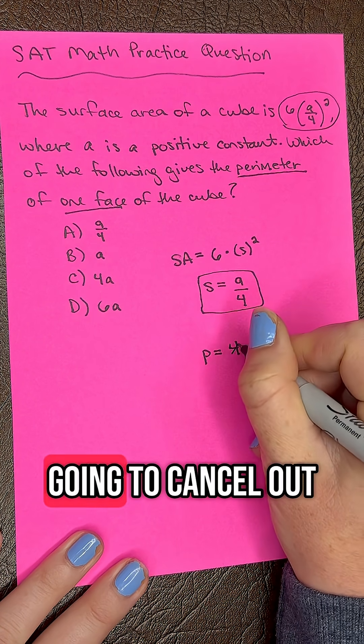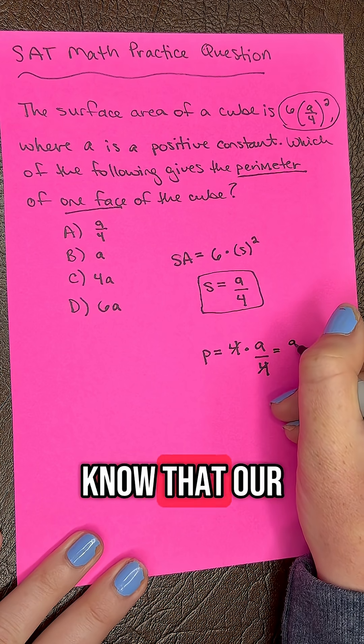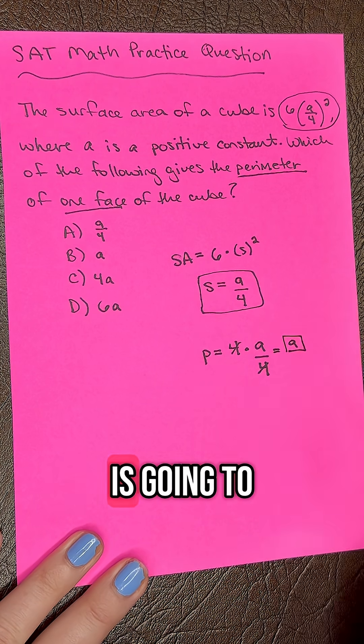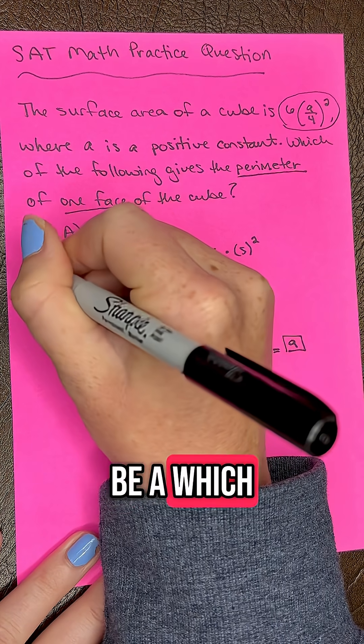Our 4s are going to cancel out, and then we know that our final answer here is going to be A, which is letter B.